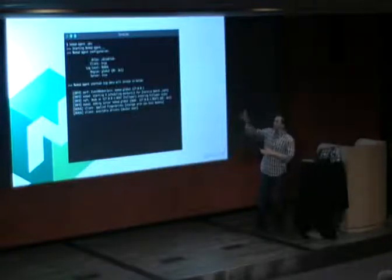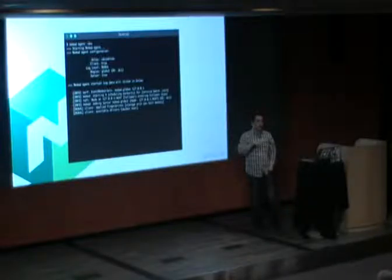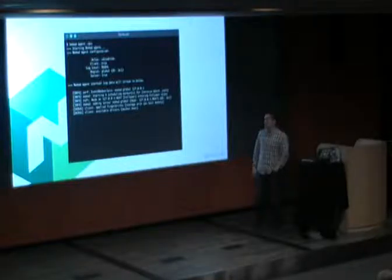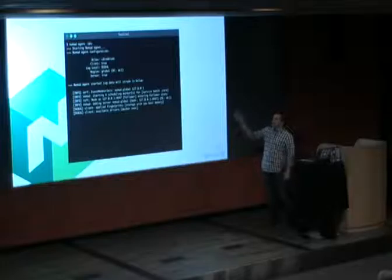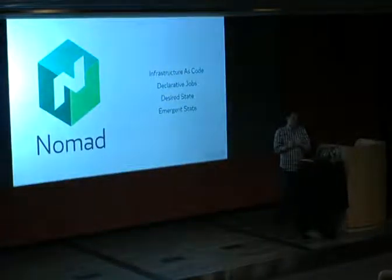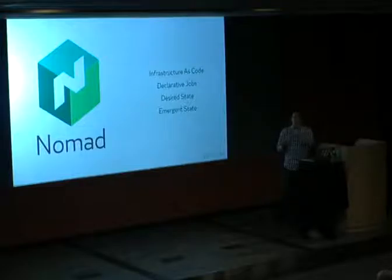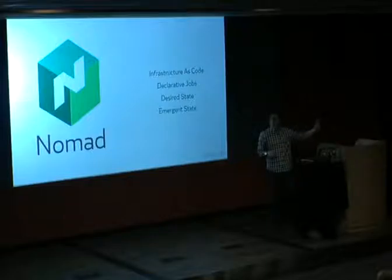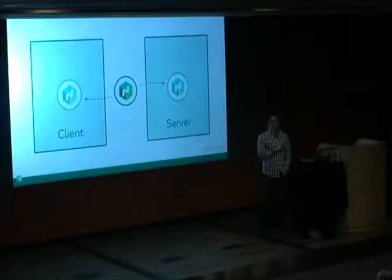There's a 'dev' flag: run 'nomad agent -dev' and it's both a server and client, all in-memory on your machine with zero configuration. When you Ctrl-C, everything dies with no state left over. This lets developers quickly test their job specifications. It detects available drivers like Docker and exec, so you can actually test locally.